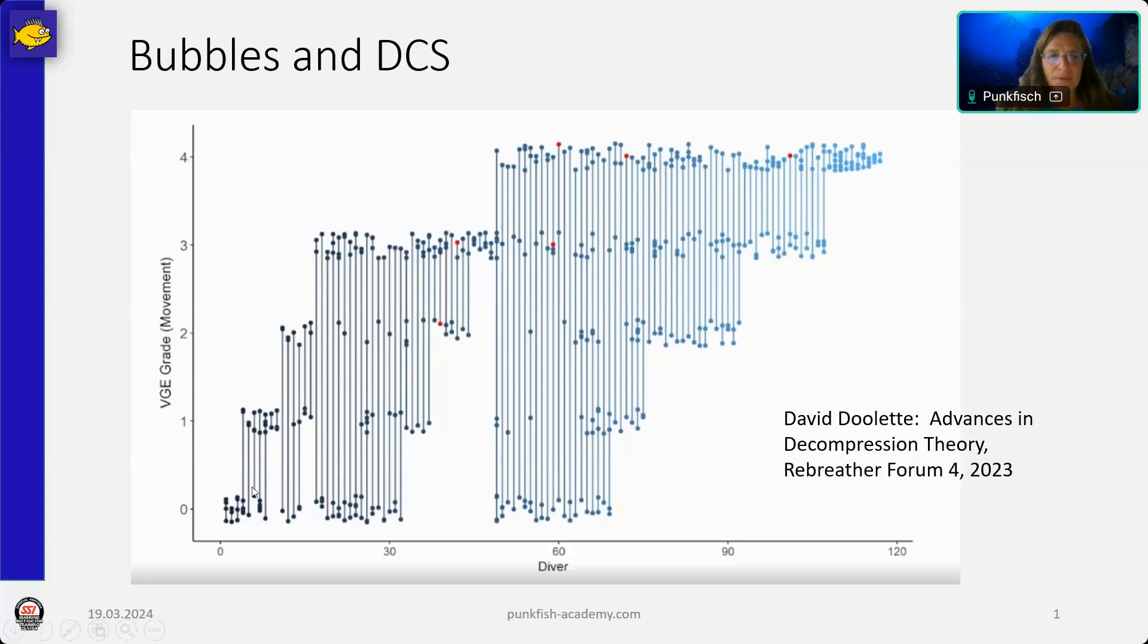What do we see here? We have some people like here, like here, and as well here, who have very constant bubble grades after the same dive. But we have a lot more people who have some variations, like sometimes no bubbles, sometimes a little bit of bubbles, sometimes grade three, sometimes grade four. And then we have this bunch of people who can end up with something in between zero and bubble grade four, something in between no bubbles at all and lots of bubbles, the same person after the same dive.